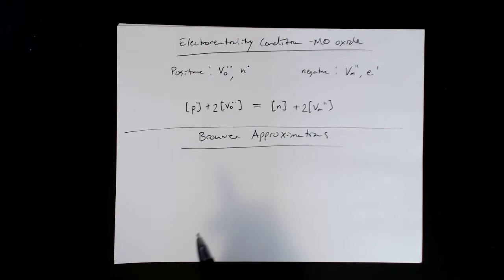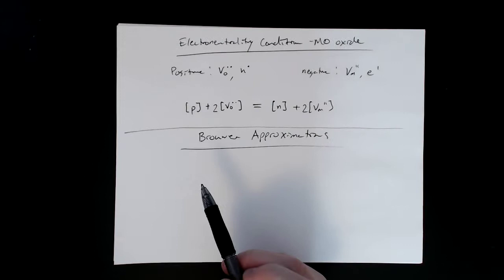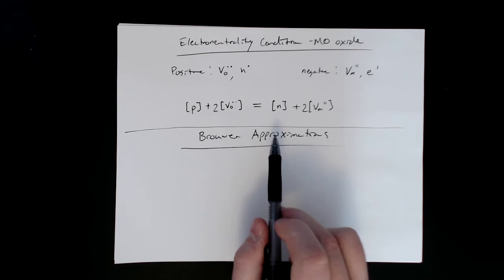Basically what the Brouwer approximation is is it takes one positive defect and one negative defect, and what that's doing is it's assuming that the one positive and one negative is the majority defect.